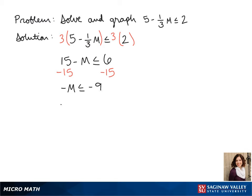Since we have to divide by a negative here, we're going to flip our sign. So negative m divided by negative 1 is greater than or equal to negative 9 divided by negative 1. After we simplify that, we get m is greater than or equal to 9.